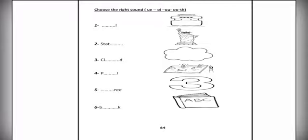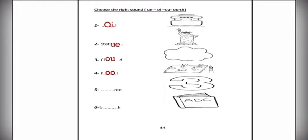Choose the right sound. The first one: OIL. Start with digraph OI. The next one: STATUE — we have a digraph here, U. The next one: CLOUD — we have a digraph here, OW. The next one: POOL — we have a digraph here, O and O.